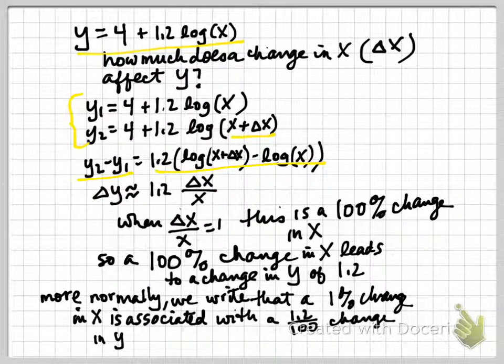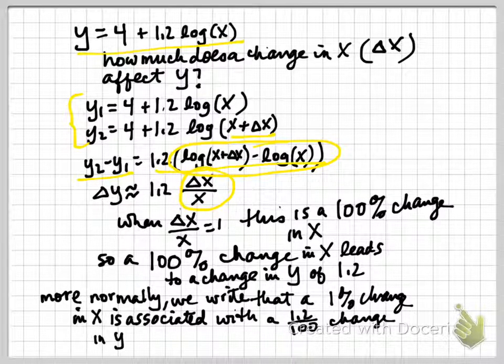This is going to be equal to this expression, because the 4s are just going to drop out. And then we know that this, and you can look in Stock and Watson's textbook to confirm that, we know that the difference between log of x plus delta x and log of x is approximately equal to delta x over x. So that's why we have this approximation sign here.